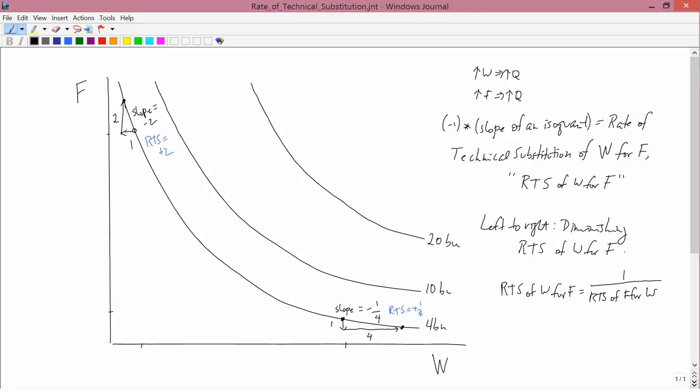then you'd get the natural thing to look at would be the rate of technical substitution of what you've put on the horizontal axis for what you've put on the vertical axis. And the relationship between those two things is given by that reciprocal.